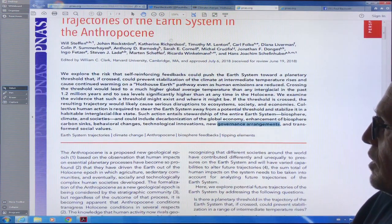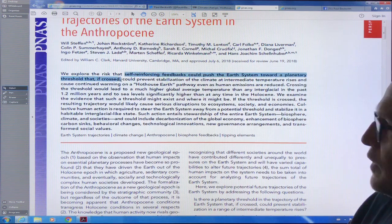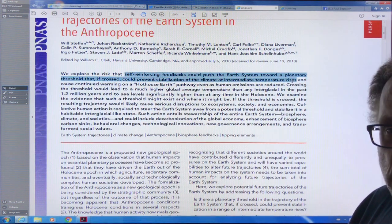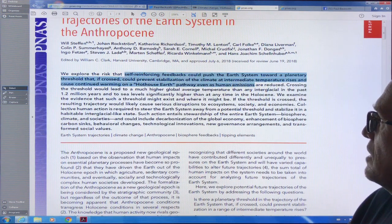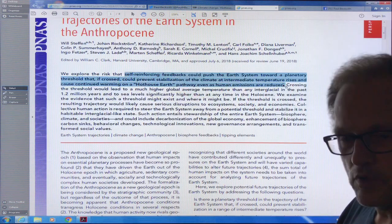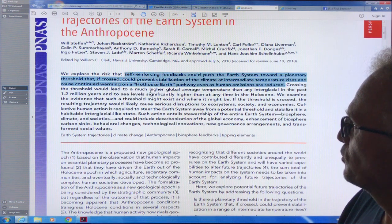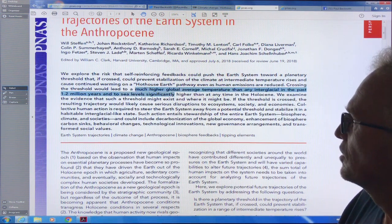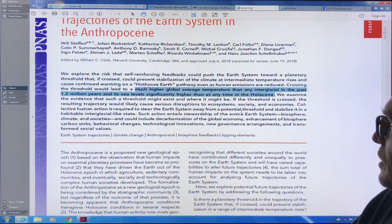The idea is that these self-reinforcing feedbacks could push the Earth system to a threshold. And if we cross this threshold, then the climate wouldn't stabilize at intermediate temperature rises. It would continue warming rapidly to a hothouse Earth pathway, even as human emissions are reduced. We don't have the luxury of time. We have to treat this as a climate emergency and act accordingly.